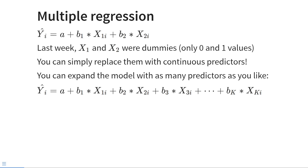But today we are delving into multiple regression, and all that changes is that x1 and x2 are no longer going to be dummy variables with only zero and one values — we simply replace them with different continuous predictors.